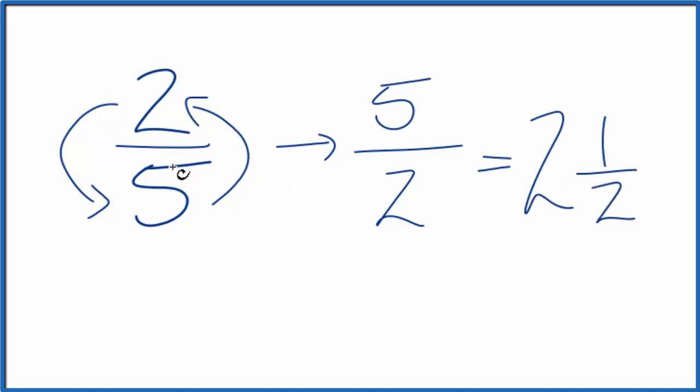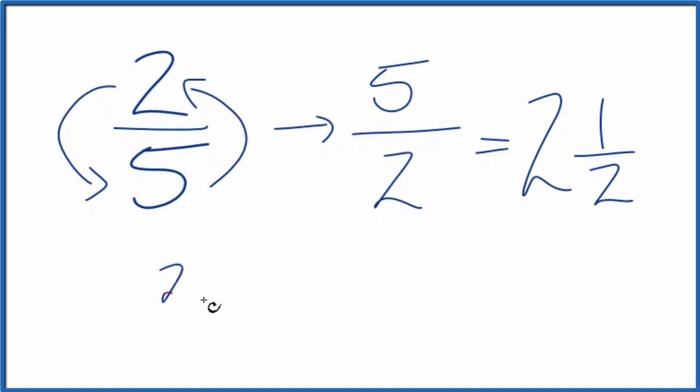The reciprocal for two-fifths is five-halves, or you could call it 2 and a half. Let's check our work. If we take the original fraction, two-fifths, and multiply that by the reciprocal, five-halves, we should get 1 if we did this correctly. 2 times 5 is 10, 5 times 2 is 10, and 10 over 10 equals 1.